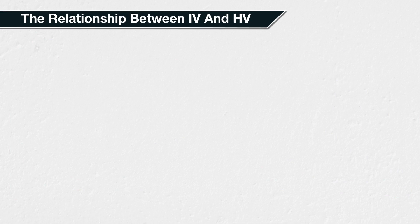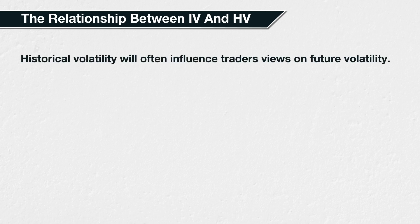While implied volatility is a measure of something completely different to historical volatility, that doesn't mean the two are not related at all. Traders' views on how the price of an asset is likely to move in the future are often based on what has happened in the past, particularly the recent past. Therefore, the recent historical volatility will often influence what price traders are willing to buy and sell options for. In this way, historical volatility can influence implied volatility.